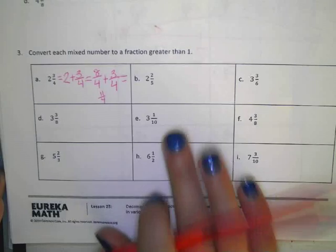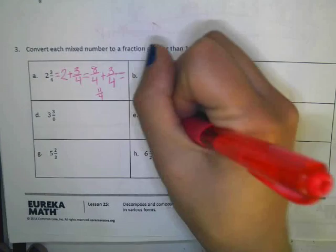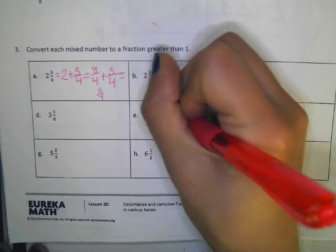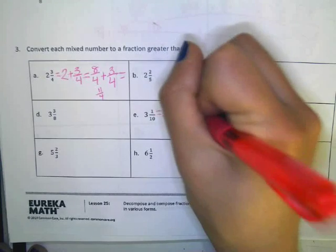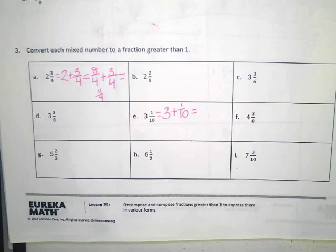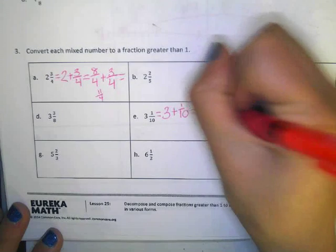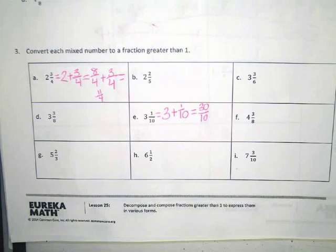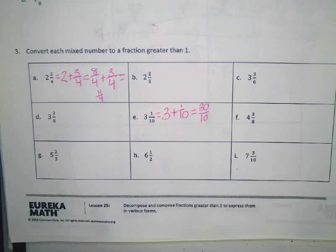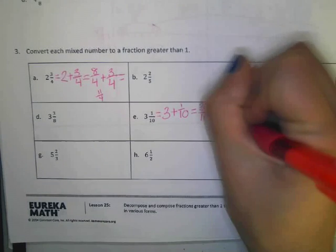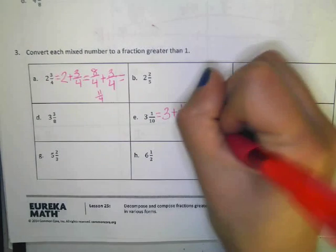Let's go ahead and skip to E and three and one tenth. I'm going to start with what I know, which is three plus one tenth. So I need to get my threes into a fraction. How do I do that with a number this big? Ten times three is thirty. So I have thirty tenths. Right? And thirty tenths plus one tenth equals what? Thirty-one tenths.